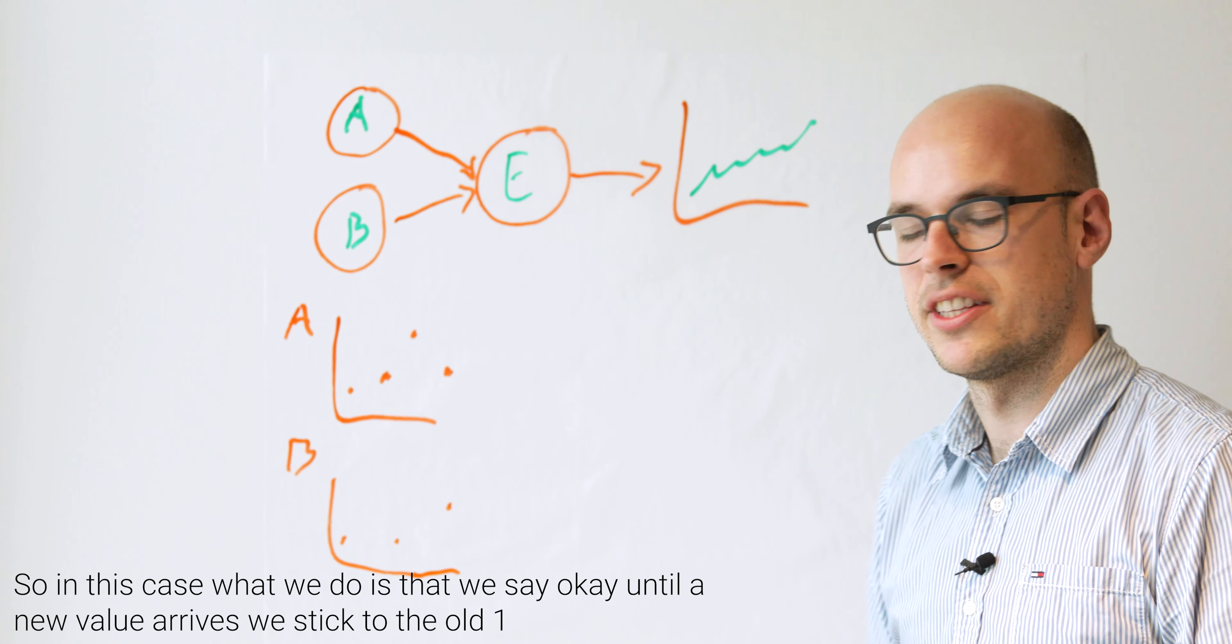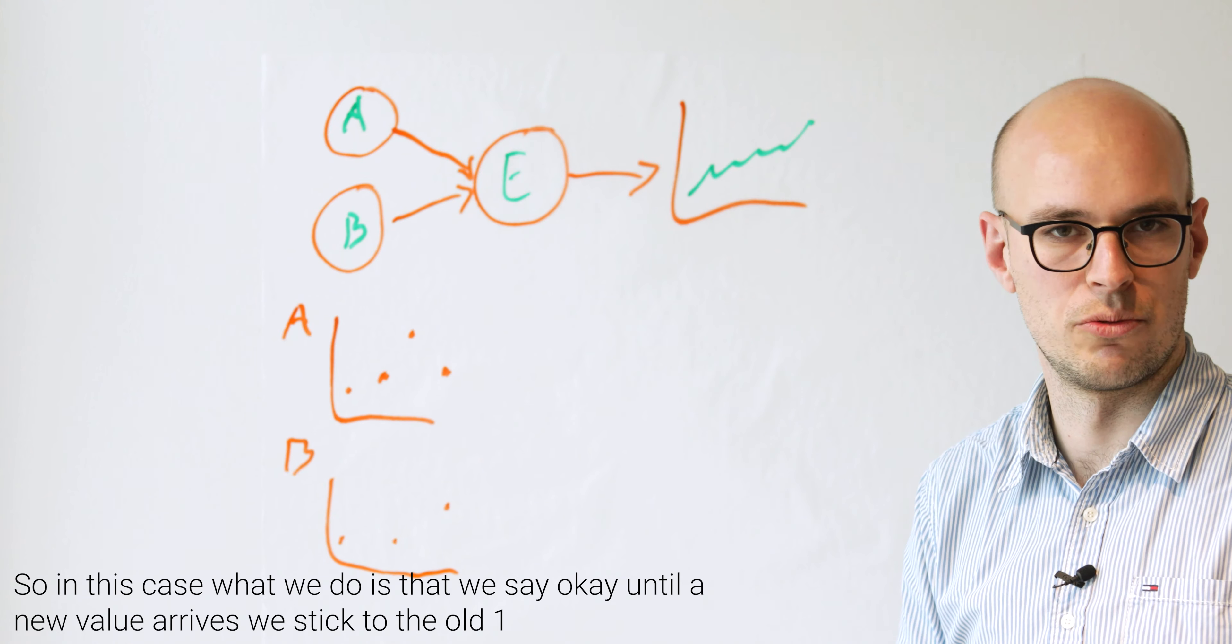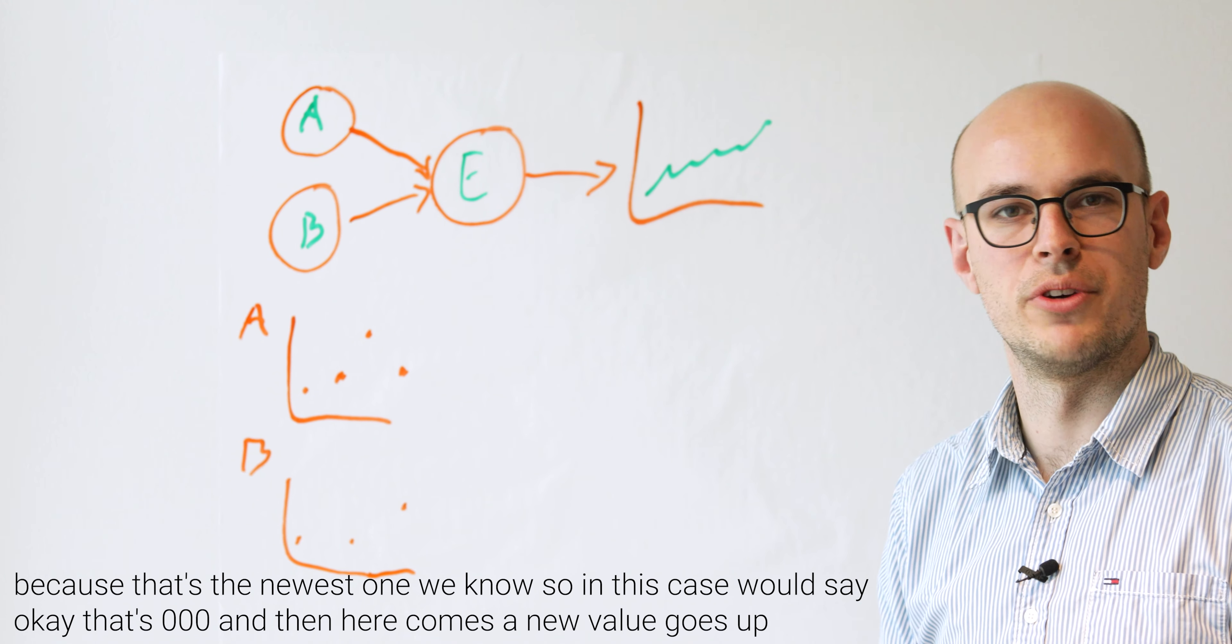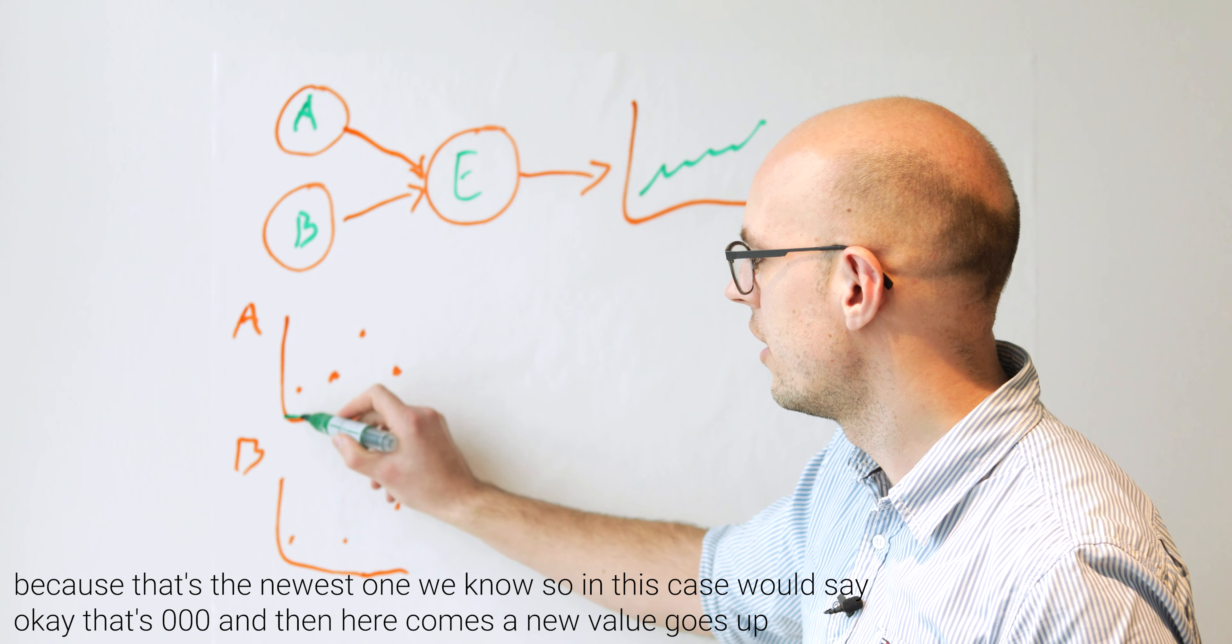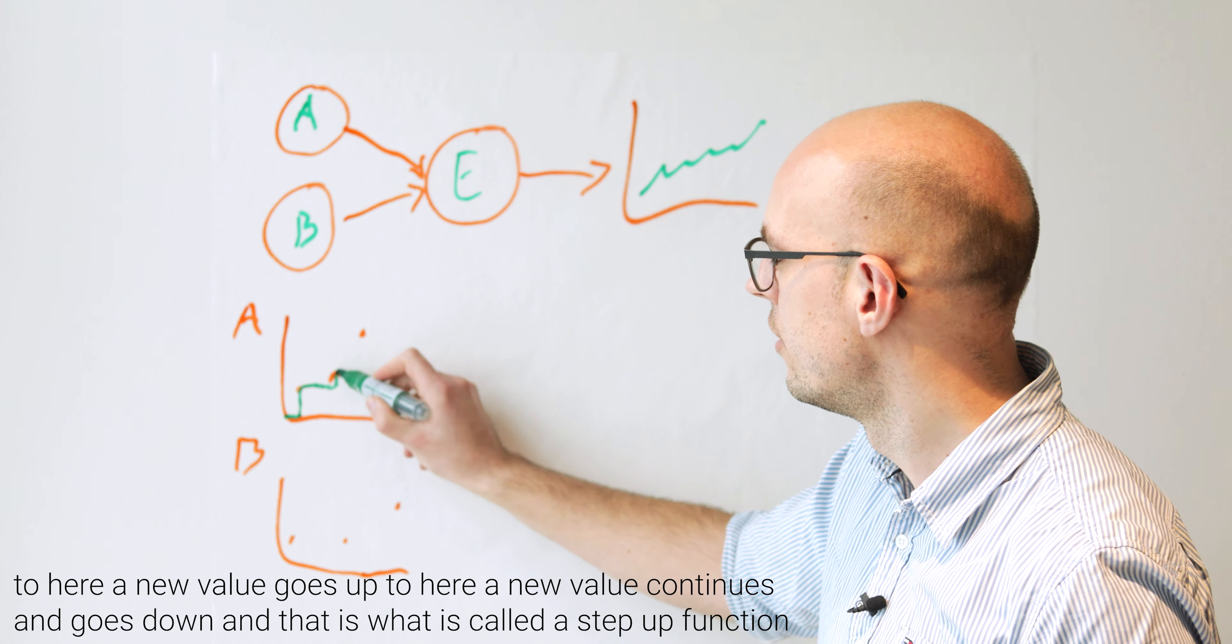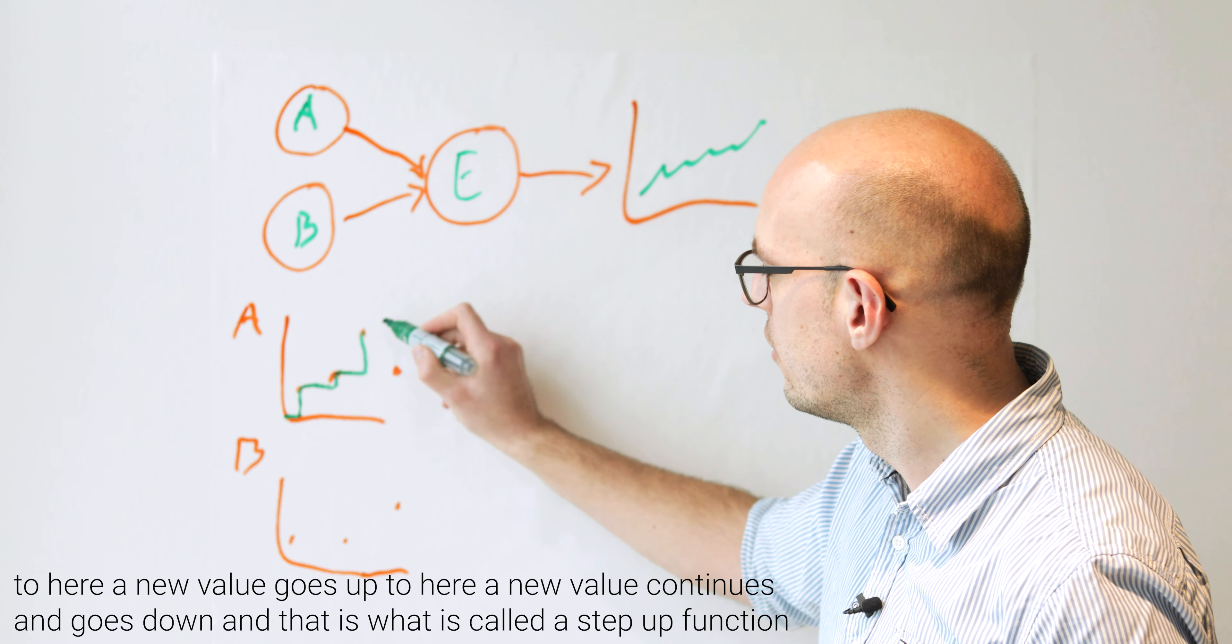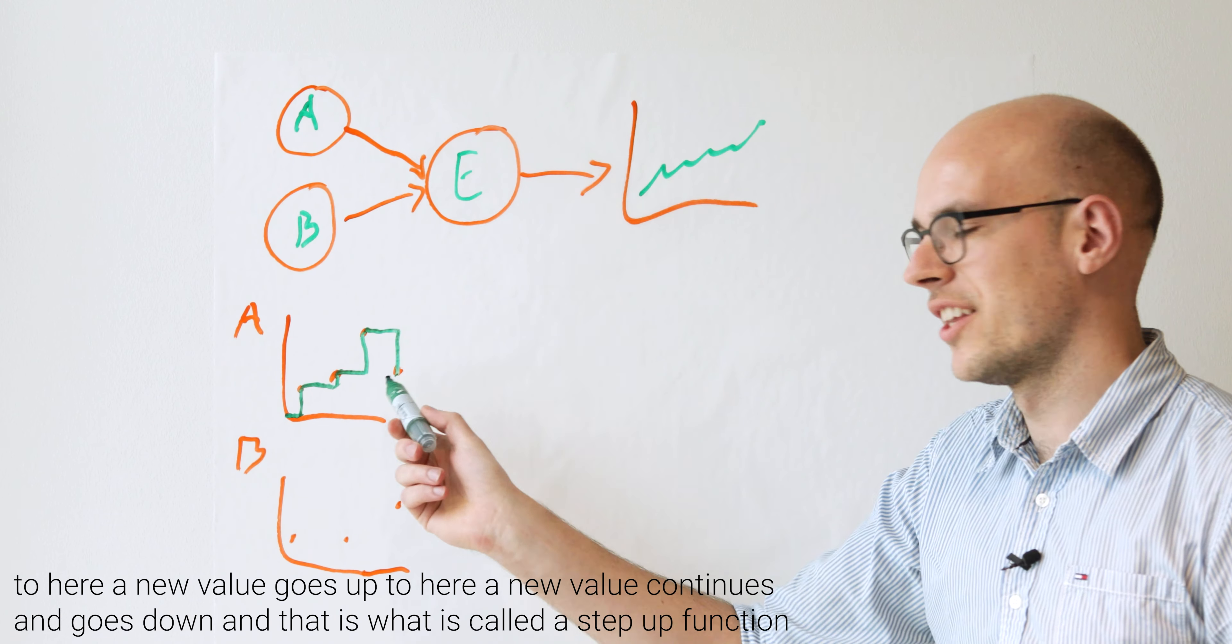So in this case, what we do is that we say, okay, until a new value arrives, we stick to the old one, because that's the newest one we know. So in this case, we'll say, okay, that's zero, zero, zero. And then here comes a new value, goes up to here, new value, goes up to here, new value, continues, and goes down. And that is what is called a step-off function. That's not important, but that's what it is.